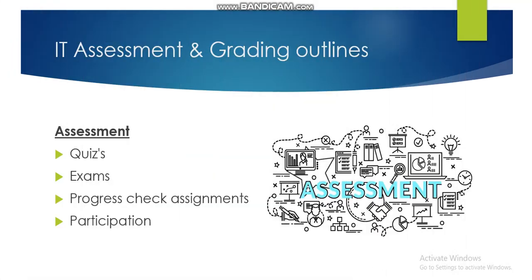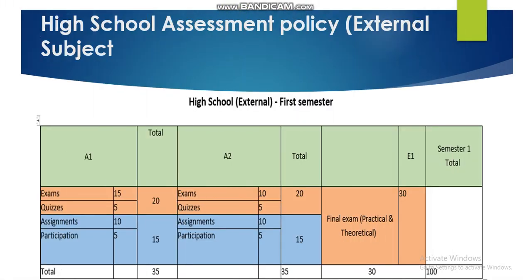As with any IT course, we have assessment and grading outlines. This is considered an external course where you will sit for an external exam at the end of each semester. Assessment categories include quizzes, exams, assignments, and participation. For each semester, A1 will be out of 35, A2 will also be out of 35, and the final will be out of 30, covering exams, quizzes, assignments, and participation.